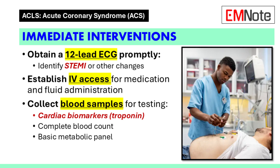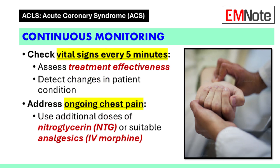Blood samples should be collected to test for cardiac biomarkers such as troponin, complete blood count, and basic metabolic panel. Continuous monitoring is required to assess the effectiveness of treatment and detect any changes in the patient's condition. Vital signs should be checked every 5 minutes. Persistent chest pain may require additional doses of nitroglycerin or other suitable analgesics.